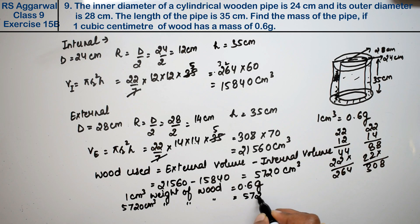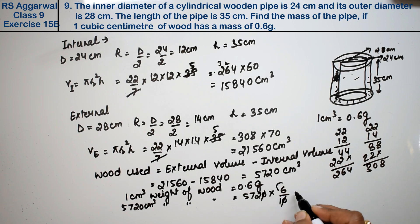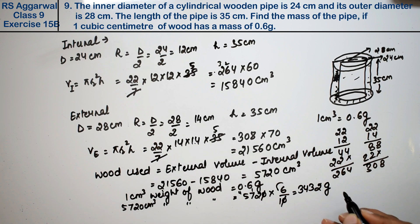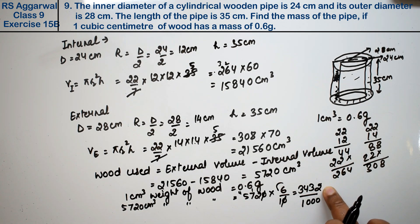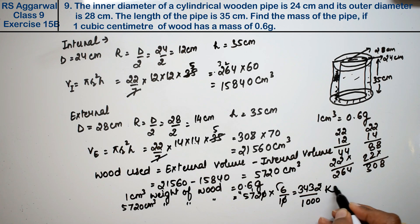5,720 into 0.6. Point removed, so 10 and 0 cancel. So 6 times 2 is 12, carry 1, 43, 4 carry, 34, right friends. This came in grams. Now we can convert it to kg if we want. To convert to kg, we divide grams by 1000.